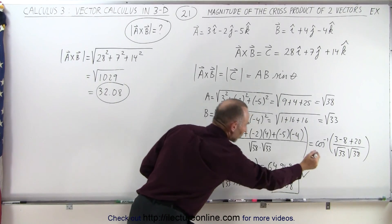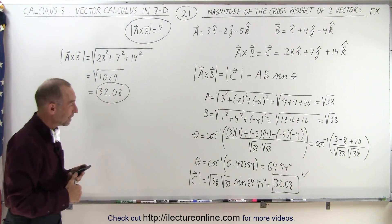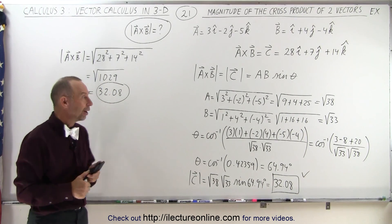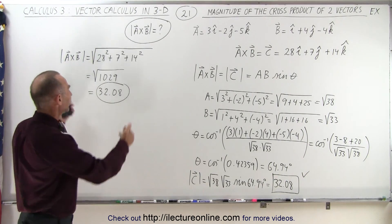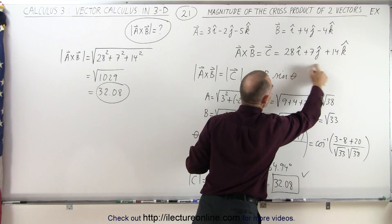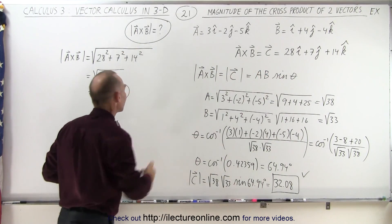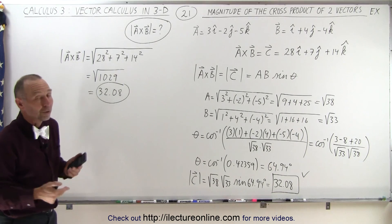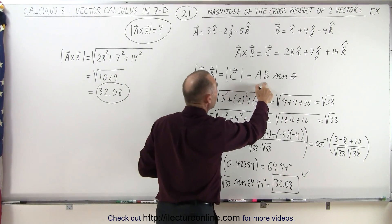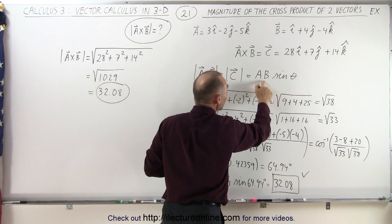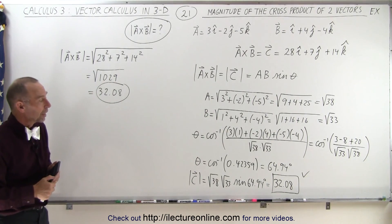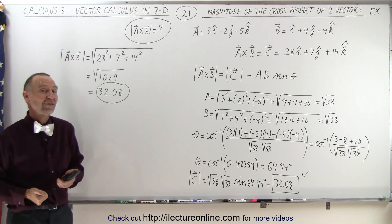Taking the square root of 1029 gives us 32.08 — exactly the same result as before. Therefore we're confident we didn't make a mistake. This is how we find the magnitude of the cross product. Obviously it's easier once you have the cross product as a vector, but you can also use the magnitude of a times magnitude of b times sine of the angle if the angle and magnitudes are known.